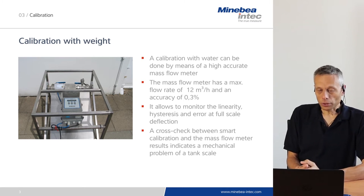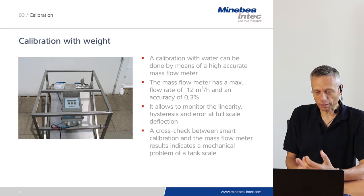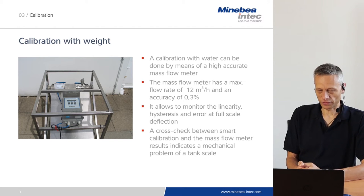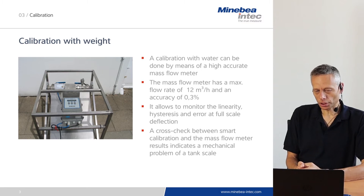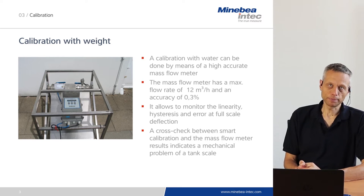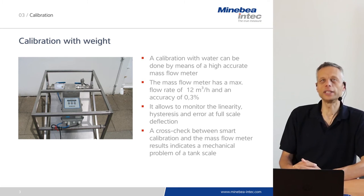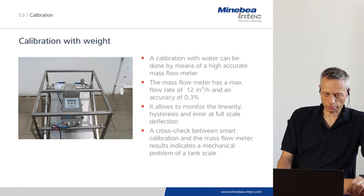Calibration by water allows you to monitor the linearity, hysteresis, and error at full scale deflection, step by step, of a process vessel scale. By using this flow meter and water, you can identify mechanical problems in a tank scale, because you compare the filling level and the readout of the mass flow meter with the readout of the weight display. So possible mechanical errors can be identified and corrected.